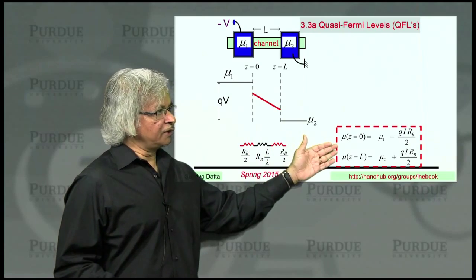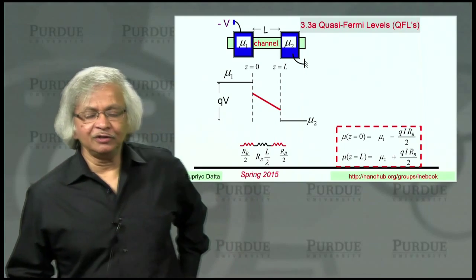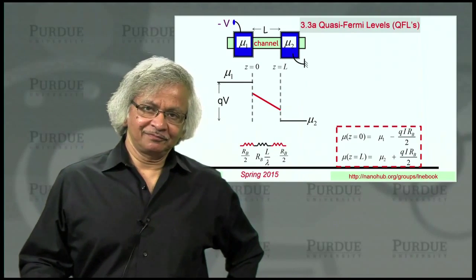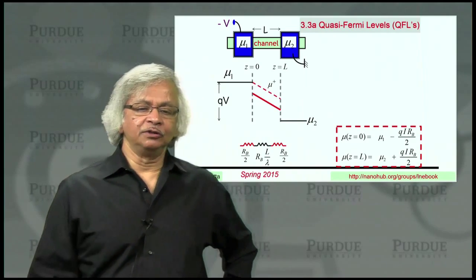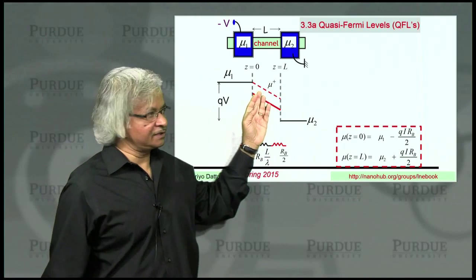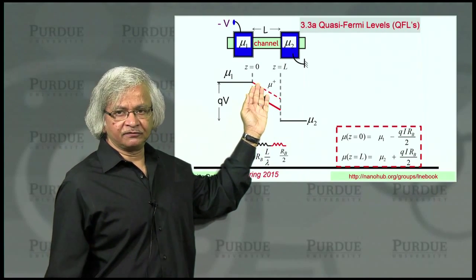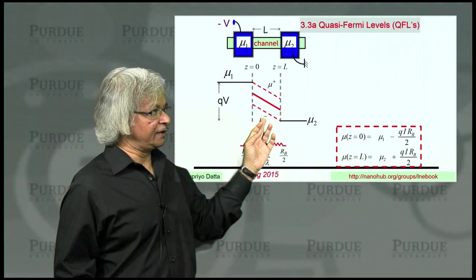What we want to do next is show where this boundary condition comes from, but we need to do that in two steps. In this lecture we'll introduce the concept of quasi-Fermi levels, the idea that there are two quasi-Fermi levels, one for right-moving carriers and one for left-moving carriers.